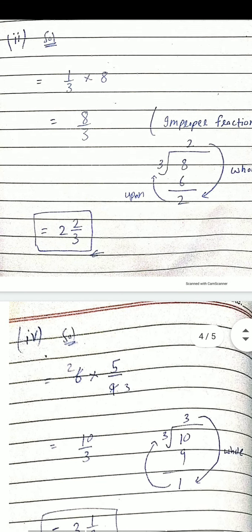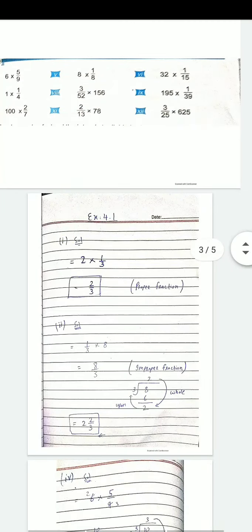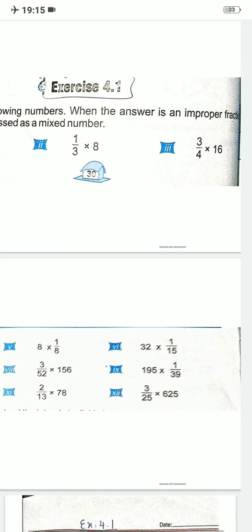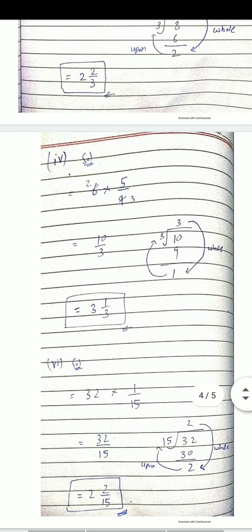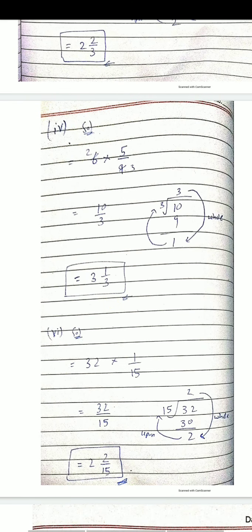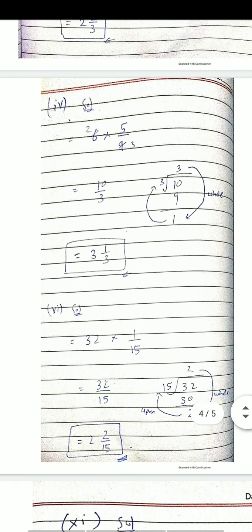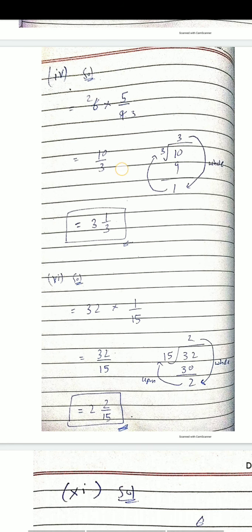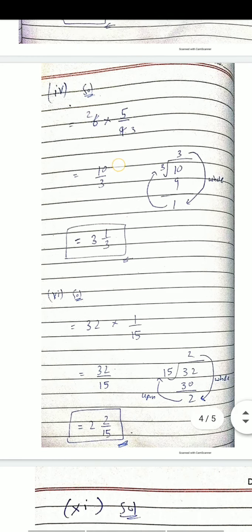اب question نمبر 4 دیکھتے ہیں: 6 multiply 5/9۔ یہاں اوپر نیچے cancel کر سکتے ہیں — 3 اور 9: 9÷3=3 اور 6÷3=2۔ تو 2×5=10، اور نیچے 3 بچا۔ تو answer ہوا 10/3۔ اب دیکھو numerator بڑا ہے، تو یہ بھی improper fraction ہے۔